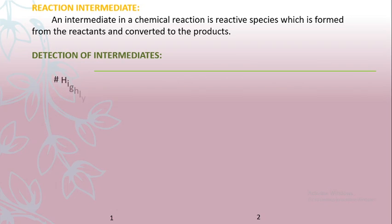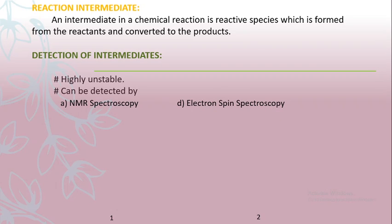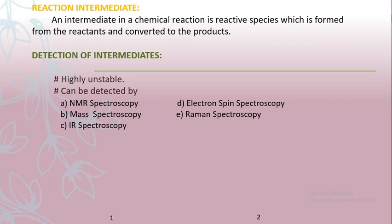For the detection of intermediates: intermediates are highly unstable and hence in most reactions cannot be isolated, but can be detected by nuclear magnetic resonance spectroscopy, mass spectrometry, infrared spectroscopy, electron spin resonance spectroscopy, and Raman spectroscopy. For example, the linear structure of NO2⁺ is detected by Raman spectroscopy, and the existence of free radicals can be determined by ESR spectroscopy.